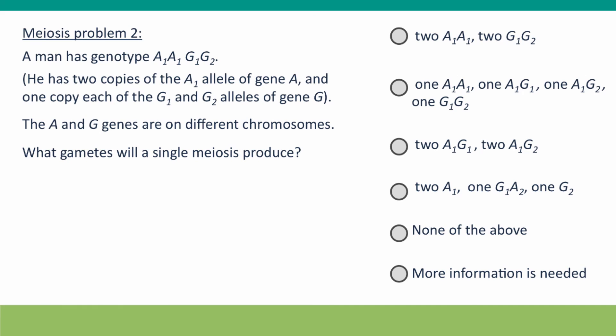In our second problem, we're considering a different man. This man is homozygous for the A₁ allele of gene A, but he's heterozygous for a different gene, gene G, and this gene is on a different chromosome. What kind of gametes will a single meiosis of this man produce?